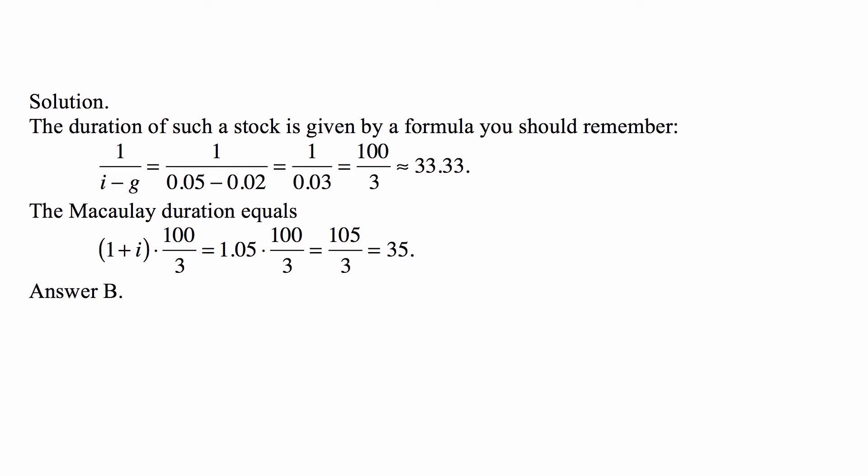The Macaulay duration equals 1 plus the interest rate times the regular duration. That's a general formula, always true for any security. In this case that makes it 1.05 times 100 over 3 or 105 over 3, which is 35. And that's answer B.